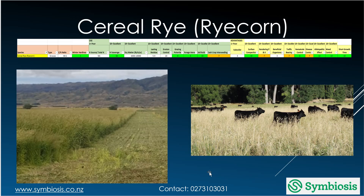Rye corn, or cereal rye if you're in the United States, is very hardy in winter. It's very good at scavenging nitrogen, can be grazed, is a good soil builder, good at dealing with soil compaction, reasonably good at assisting with phosphorus and potassium, and has a very good allelopathic effect as well.